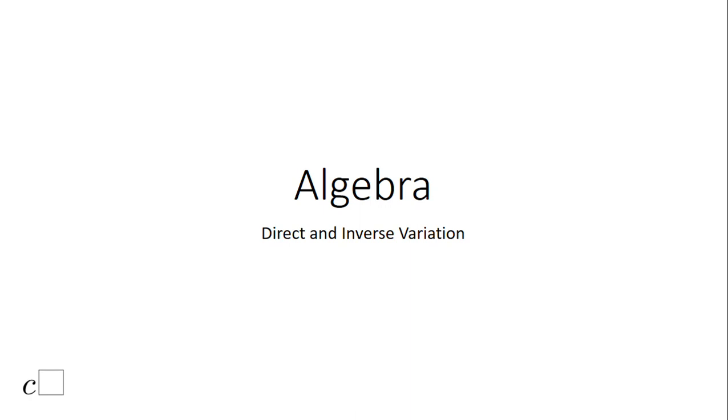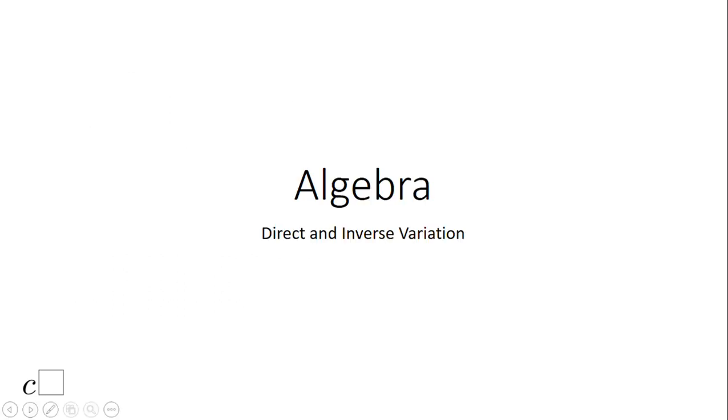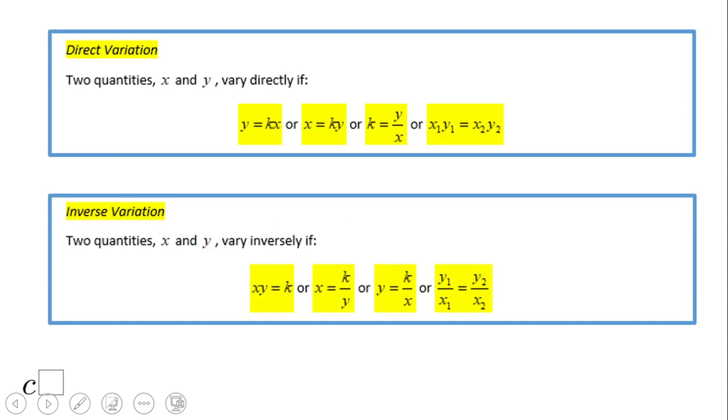Welcome or welcome back to Cisco. In this video today we're going to talk about direct and inverse variation. First of all, let's take a look at these two things. Direct variation: the quantities vary directly. These are the equations you can use: y equals kx. This one is a good way, but most of the time we're going to use this.